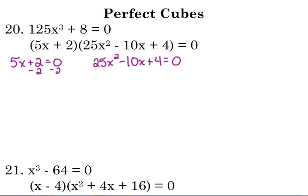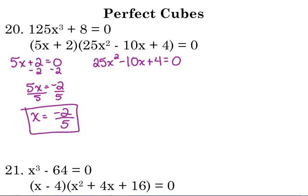we get negative 2 over 5 as one of our solutions. How many solutions are we supposed to have? Three. So that's one of them.